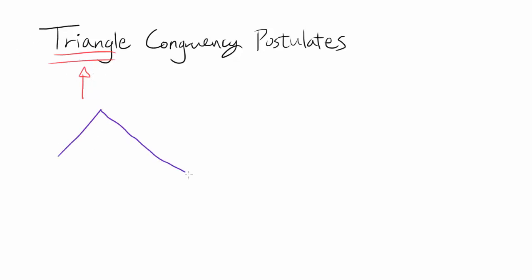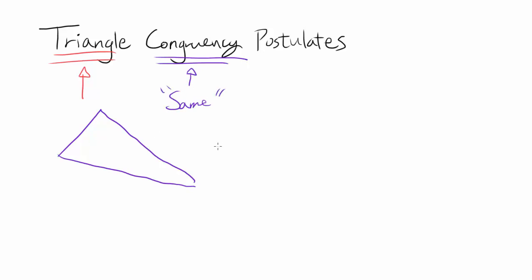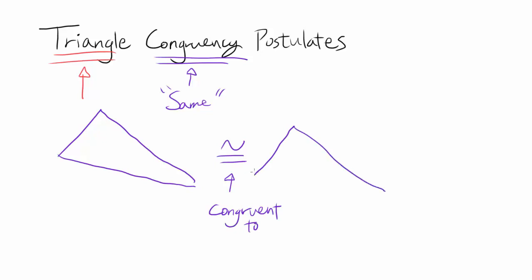So we can have some triangle. Congruency means they are the same — same shape. So this triangle is congruent to another triangle. The congruent-to symbol looks like this: a squiggly sign with an equal sign underneath. So this triangle can be congruent to this triangle, and you can even rotate it around.